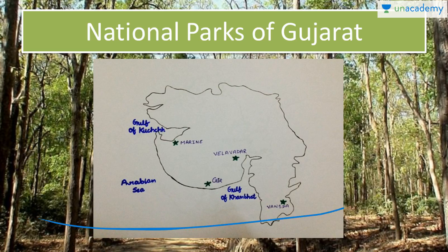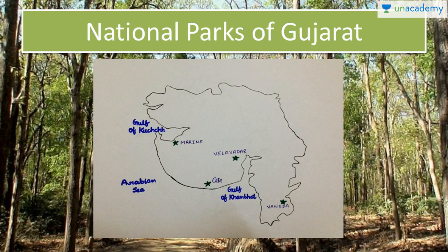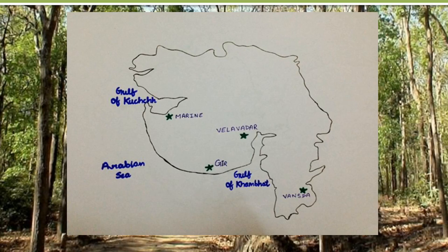Here we have the physical map showing national parks of Gujarat. First is Velavadar National Park that is in north of Gulf of Khambhat. Next is Gir National Park at the bottom of Gujarat, Marine National Park at the coast of Gulf of Kutch, and next is Vansda National Park. We will discuss each of these in detail further.